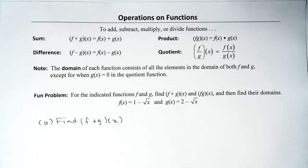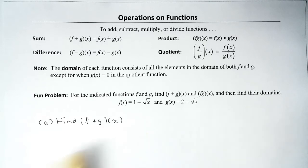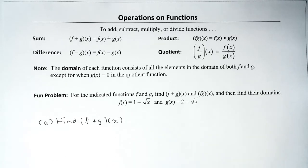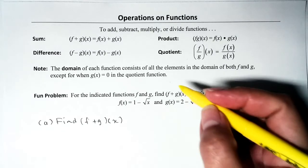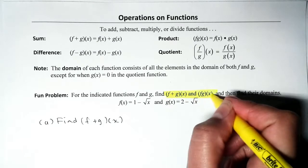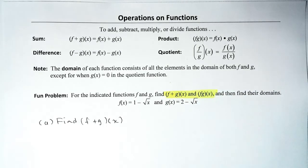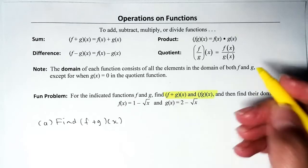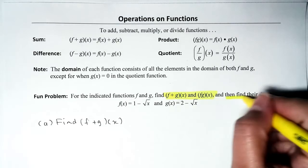We have two functions: f of x equals 1 minus square root of x, and g of x equals 2 minus square root of x. There are two things we are asked to find — one, we're supposed to find the sum, and two, we're supposed to find the product. And we're also asked to find our domains.